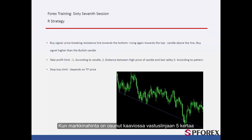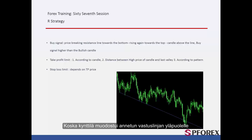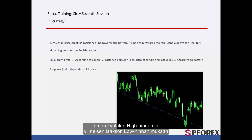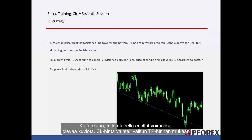On the graph, after the market price hit the resistance line five times, it crossed the line towards the bottom, then returned towards the top. As a candle formed above the resistance line, a trader could place a buy order. TP prices could be determined by the bullish candle length and the distance between the high price of this candle and the low price of the candle on the last valley. However, there was no valid pattern in this region. SL price varied based on the selected TP price.